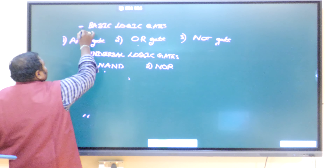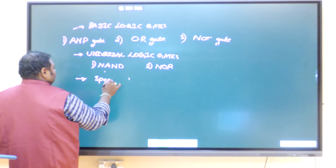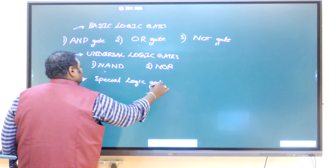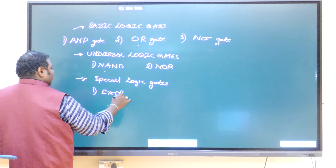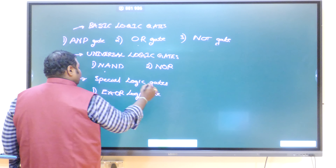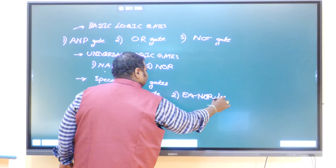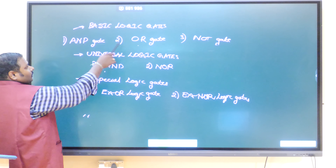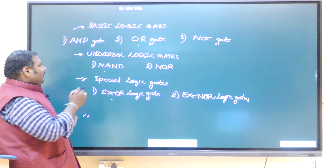The third category is special logic gates. Special logic gates are basically combinations of the basic gates. The first gate in this category is the XOR logic gate. So in total, we have three basic gates, two universal gates, and two special gates.